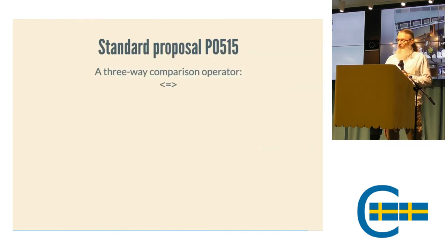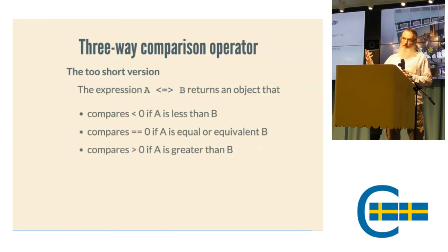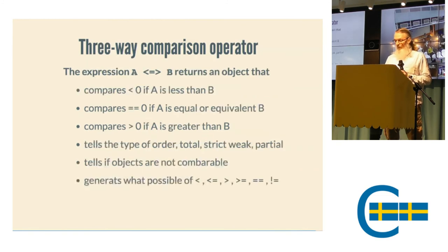Standard proposal P0515 - three-way comparison operator. We know it from other languages. If A is less than B, it returns something less than zero. If A is equal, then zero. If A is greater, then something greater than zero. But this is not the whole truth. It tells us also the type of order - if it's a total, strict, weak, or partial order. We have objects where we just implement the equality operator and not the less operator. And that generates the other operators for us, so we don't need to write them anymore. This will be nice.